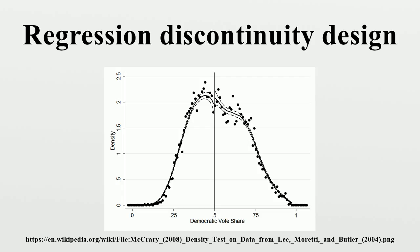The two most common approaches to estimation using RDD are non-parametric and parametric. The most common non-parametric method used in the RDD context is a local linear regression. This is of the form where the treatment cut-off is defined, with a binary variable equal to one if above the cut-off, and a bandwidth of data used. Different slopes and intercepts fit data on either side of the cut-off.